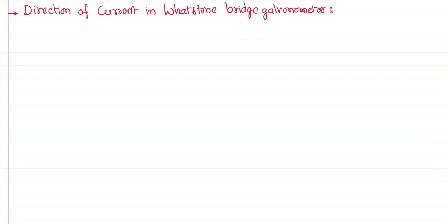In this video we would like to talk about the direction of current in a Wheatstone bridge — in which direction current flows in the galvanometer when the bridge is in a balanced state and when the bridge is not in a balanced state. That's the thing we want to discuss here. Before that, let me tell you once again what we mean by a Wheatstone bridge.